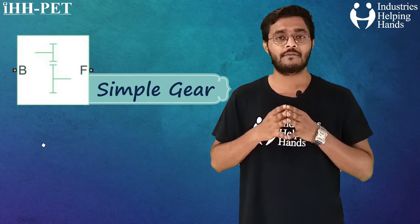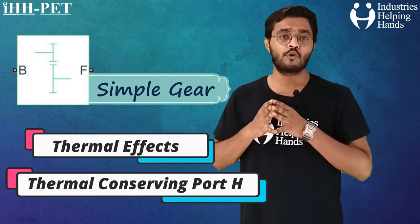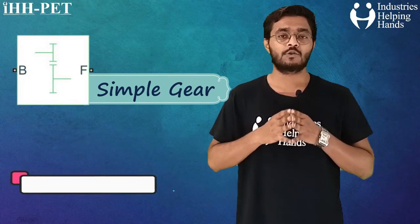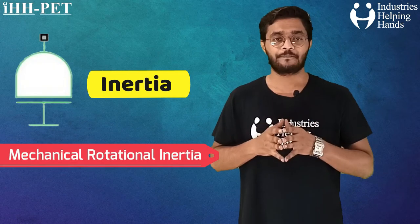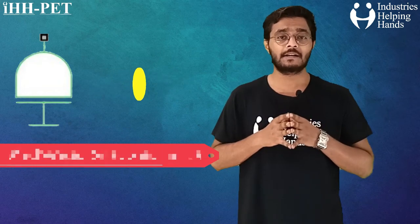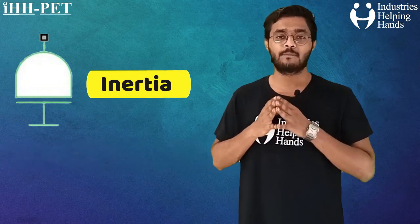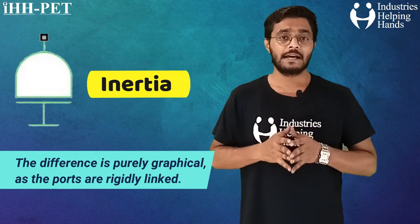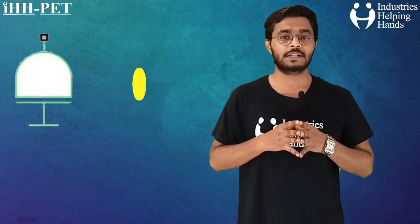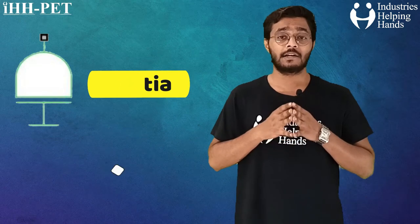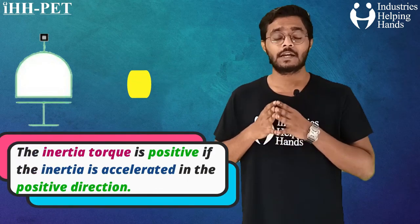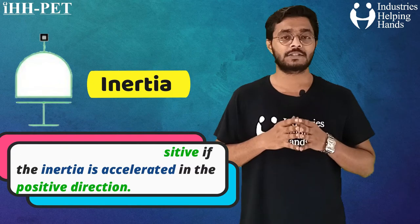Optionally, the simple gear block includes thermal effects and exposes a thermal conserving port by setting the friction model to a temperature-dependent setting. The next block is inertia, which represents an ideal mechanical rotational inertia. The block has one or two mechanical rotational conserving ports — the difference is purely graphical as the ports are rigidly linked. The inertia torque is positive if the inertia is accelerated in the positive direction.